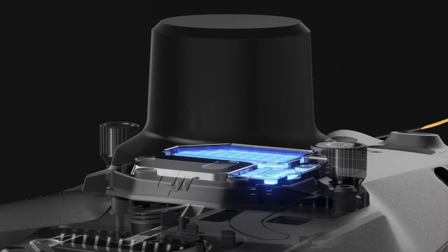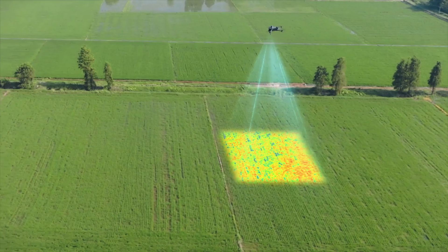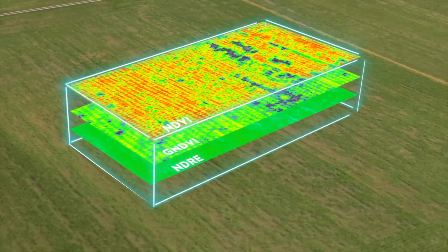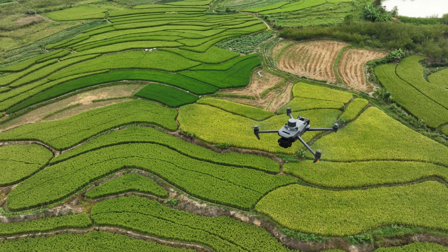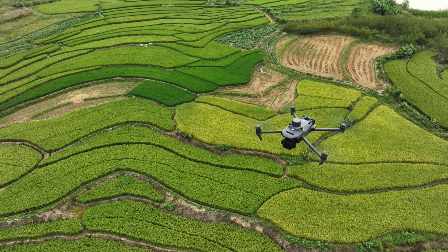So it does have centimeter level RTK positioning. You're going to get the RTK sensor on top. It has a built in sunlight sensor on the top, which is going to help with the multispectral imaging, giving the right calculations.